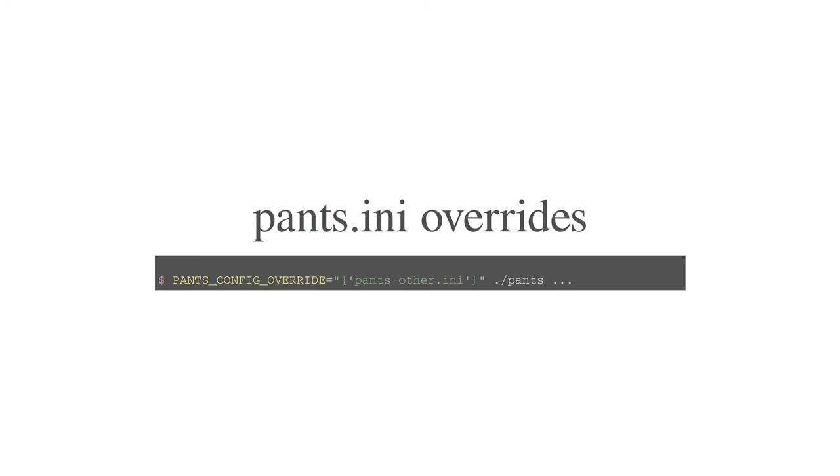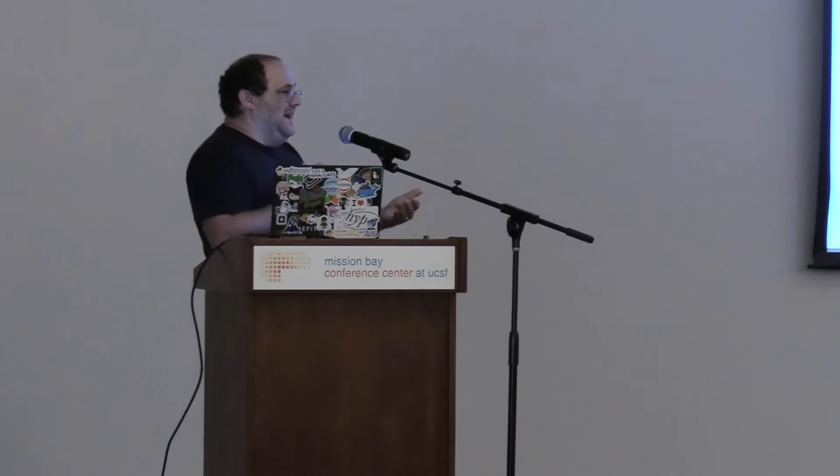This is how you do it. Pants config override is an environment variable containing a Python string — specifically a list with names of other ini files. It means you have a really nice space to compose from. You can have two different ways to change the configuration that you sometimes want to apply together and sometimes each one apart. The number of options is basically two to the power of the number of change configurations you have. The cost of that flexibility is that for the simple case, it's kind of weird.